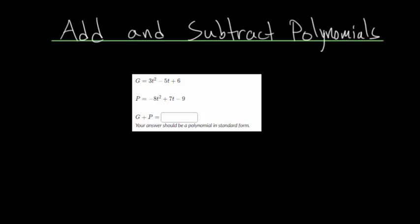In this video, I'd like to talk about how to add and subtract polynomials. We have this example problem where we're given two polynomials, g and p, which both look to be quadratics, and we need to take g and then add it to p, and then put that polynomial in standard form.